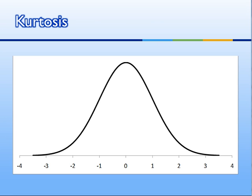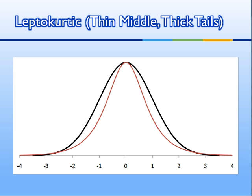A normal curve is said to have no kurtosis, and we compare other distributions to the normal curve to decide how peaked the distribution is. Here is a leptokurtic distribution. Lepto means thin — it refers to the thinness or skinniness of the middle compared to the normal curve. It makes up for that thinness at the tails, which are actually thicker than the normal curve.